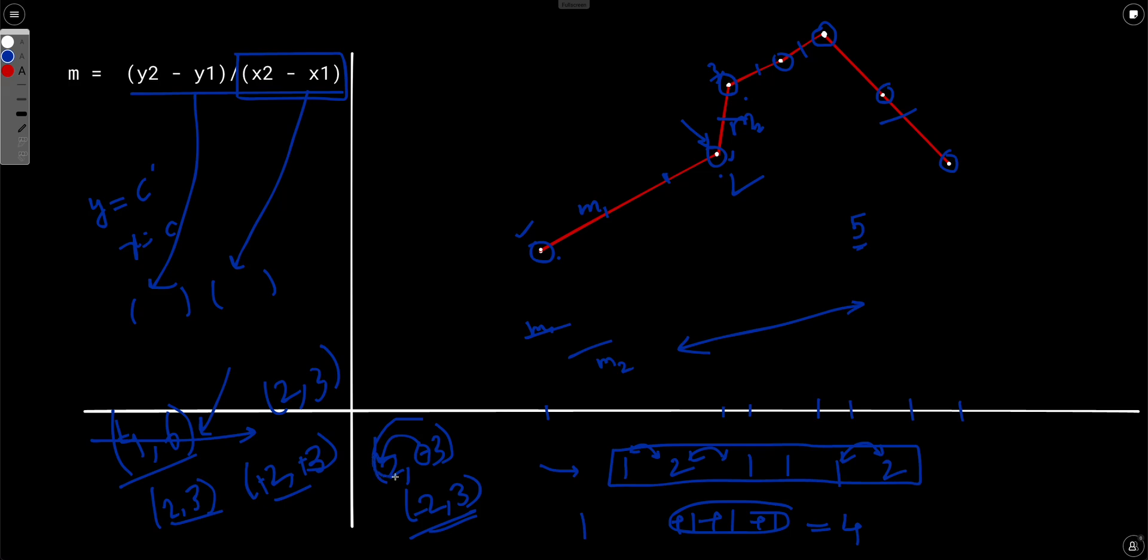Like if one is minus and one is positive, always keep minus to the first front. So if the slope comes to be (2, -3), we will convert it to (-2, 3).